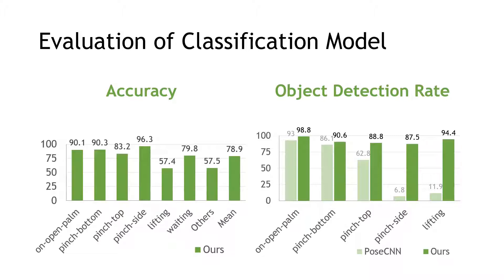From the results, we can see that our classification model achieves a higher detection rate, especially when heavy occlusion occurs, such as when subjects grasp an object in a pinch side pose or in the lifting pose.